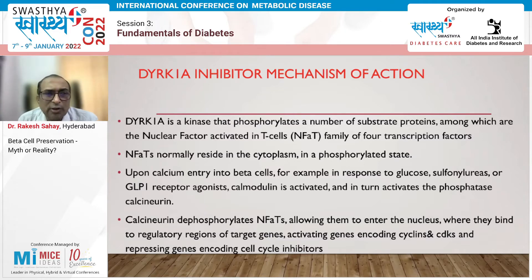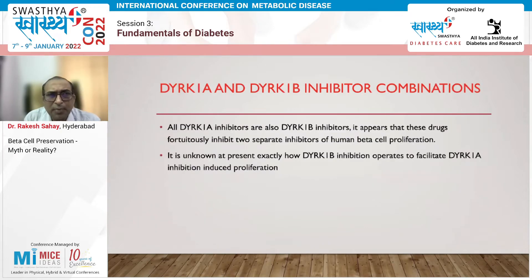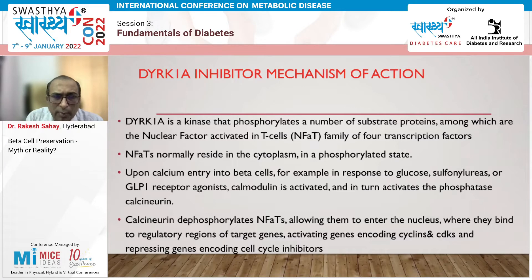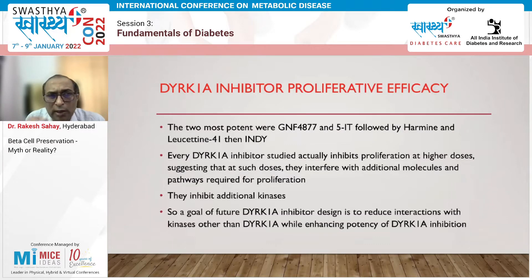The NFAT nuclear factors are activated and suppress beta cell replication and regeneration. When a DYRK1A inhibitor is used, it allows beta cells to regenerate. When DYRK1A inhibitors are used, they produce proliferation of beta cells by inhibiting both DYRK1A and DYRK1B. Both are inhibited by the same molecules and both cause proliferation of beta cells.